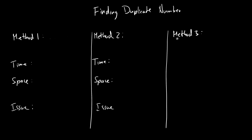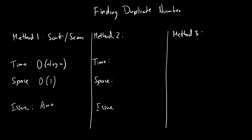Now let's think about the methods and what worked and what did not work and why. Method number one is sort and scan — sort and then scan. The time complexity would be O of N log N, and space would be either O of one or so. But the issue is that the array would be modified, so that's why it couldn't work.